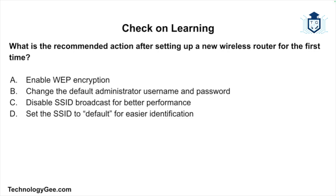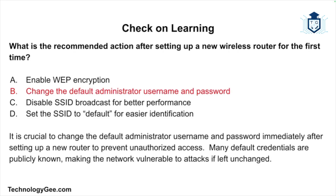Question 3: What is the recommended action after setting up a new wireless router for the first time — enabling WEP encryption, changing the default admin username and password, disabling the SSID broadcast for better performance, or setting the SSID to default for easier identification? The correct answer is changing the default admin username and password. It is critical to do this immediately to prevent unauthorized access, as many default credentials are publicly known.